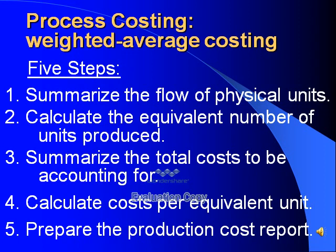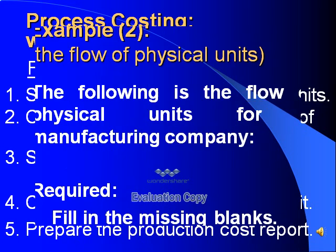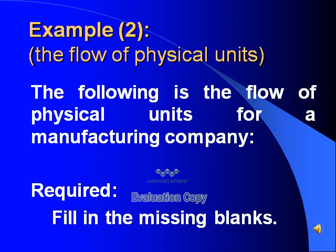The weighted average costing method has five steps. Step 1: Summarize the flow of physical units. Step 2: Calculate the equivalent number of units produced. Step 3: Summarize the total costs to be accounted for. Step 4: Calculate costs per equivalent units. Step 5: Prepare the production costs report.